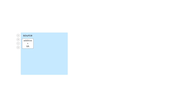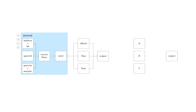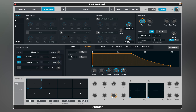Each source consists of additive, virtual analog, spectral, granular, and sampler elements, and multiple elements can be active in each source. Each source has three independent filters that can operate in parallel or in series. After you shape the basic tone, you can send it to two main filters and pass through the effects stage before the main output. You can run the signal in parallel fashion, mixing from different sources, or in series where it's processed at each step before hitting the output.